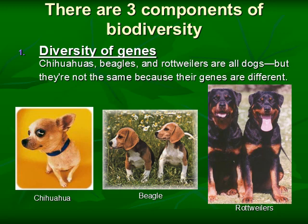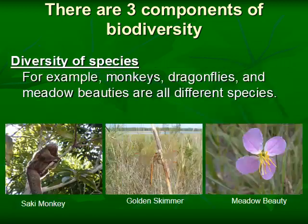The first one is diversity of genes. Like what we have in the picture — they are all dogs, right? But the Chihuahua, the Beagle, and the Rottweiler are not exactly the same. Why? Because their genes are different. It's the same with us. Though you have the same parents, you don't look exactly the same as your sister or brother, because your genetic makeup is different.